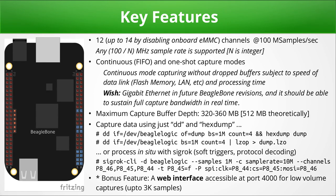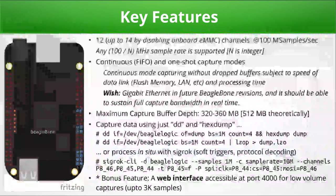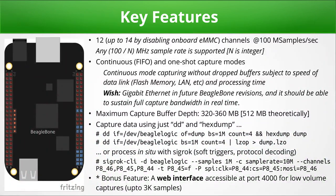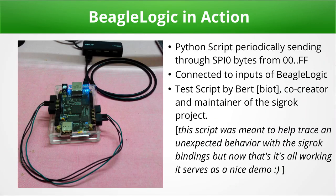As a bonus feature, BeagleLogic also has a web interface accessible via port 4000 for quickly capturing and viewing data in a web browser. Here is our test setup: a BeagleBone Black with a Python script running on it which is outputting bytes 0x00 to 0xFF from the SPI port, connected to the inputs of BeagleLogic.